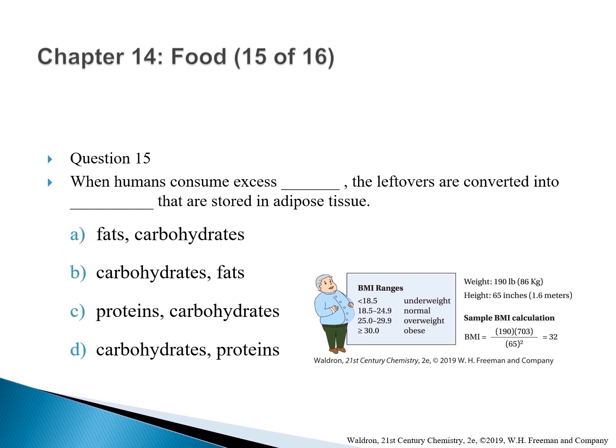Question 15: When humans consume excess blank, the leftovers are converted into blank that are stored in the adipose tissue. The correct answer is B — carbohydrates, fats. The excess amount of carbohydrates are converted to fats first, then the fats go into long-term storage in adipose tissue.